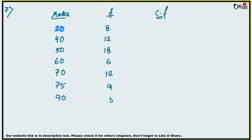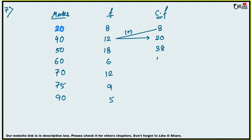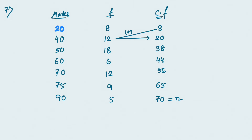Now find the cumulative frequency. The first one is 8. For the second: 8 plus 12 equals 20. Then 20 plus 18 is 38. 38 plus 6 is 44. 44 plus 12 is 56. 56 plus 9 is 65. 65 plus 5 equals 70. So n equals 70, which is an even number.